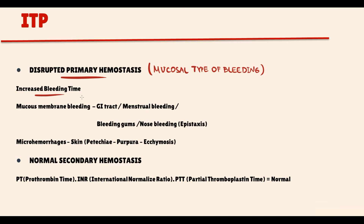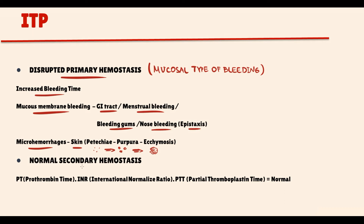The major feature is mucous membrane bleeding — bleeding from the GI tract, bleeding during menstruation, bleeding gums, and nosebleeds (epistaxis). Disruption of primary hemostasis also causes microhemorrhages that on the skin manifest as petechiae and purpura. Importantly, decreasing platelet count does not affect secondary hemostasis. Therefore, in immune thrombocytopenic purpura, prothrombin time, international normalized ratio, and partial thromboplastin time are completely normal.